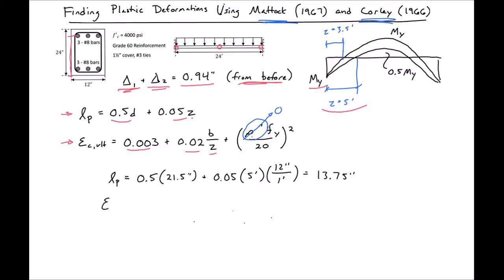Similarly we can plug in for our epsilon C ultimate. We would just plug in our B which is 12 inches over Z which is five feet times 12 inches. And we'd get our epsilon ultimate to be 0.007.